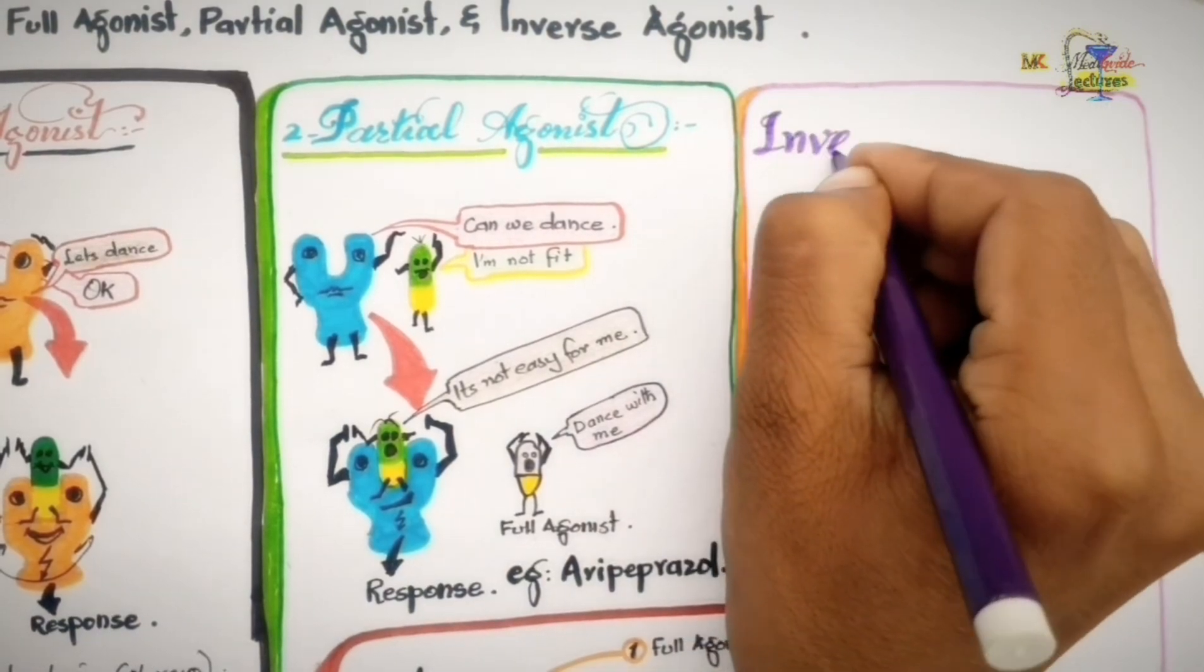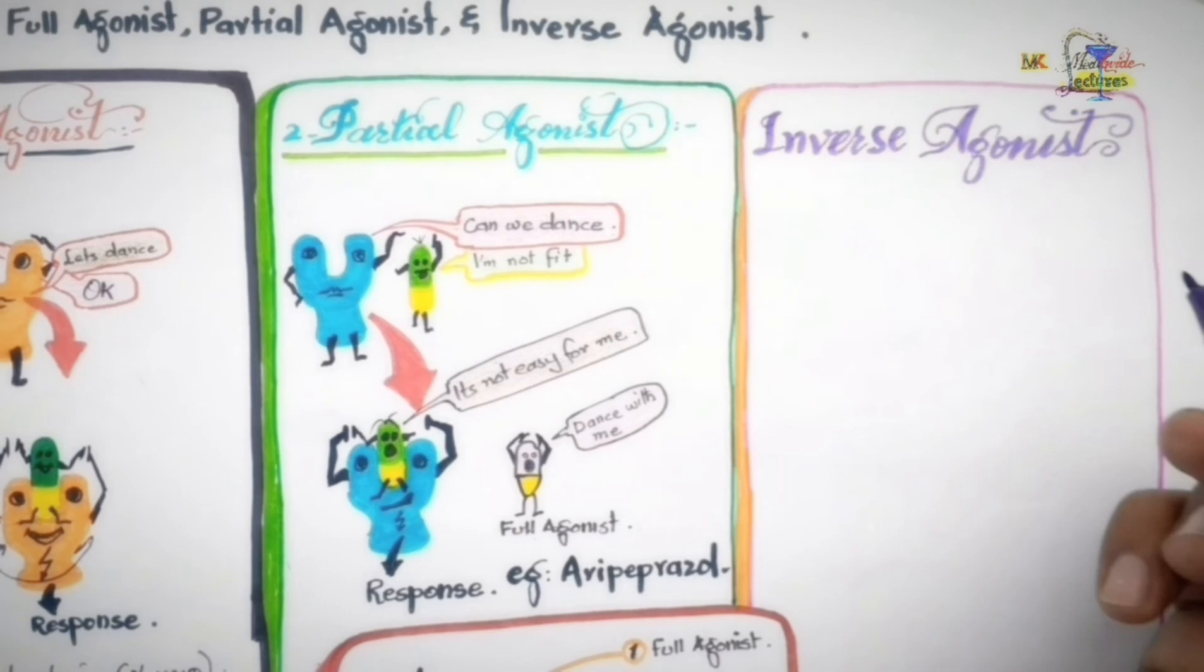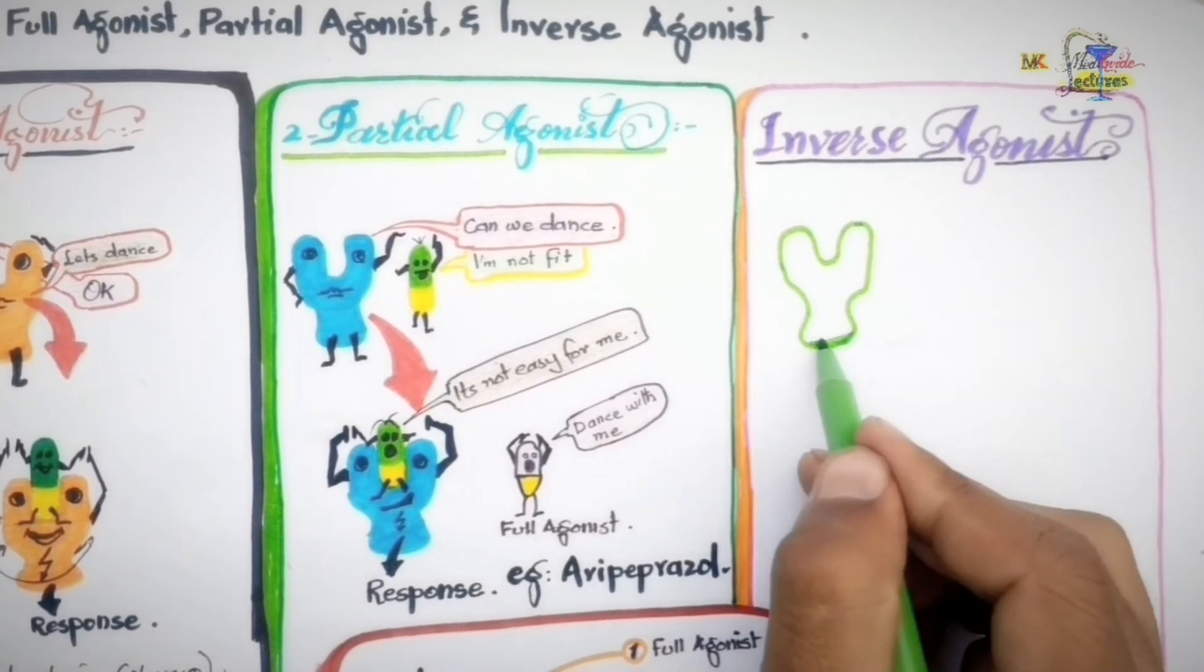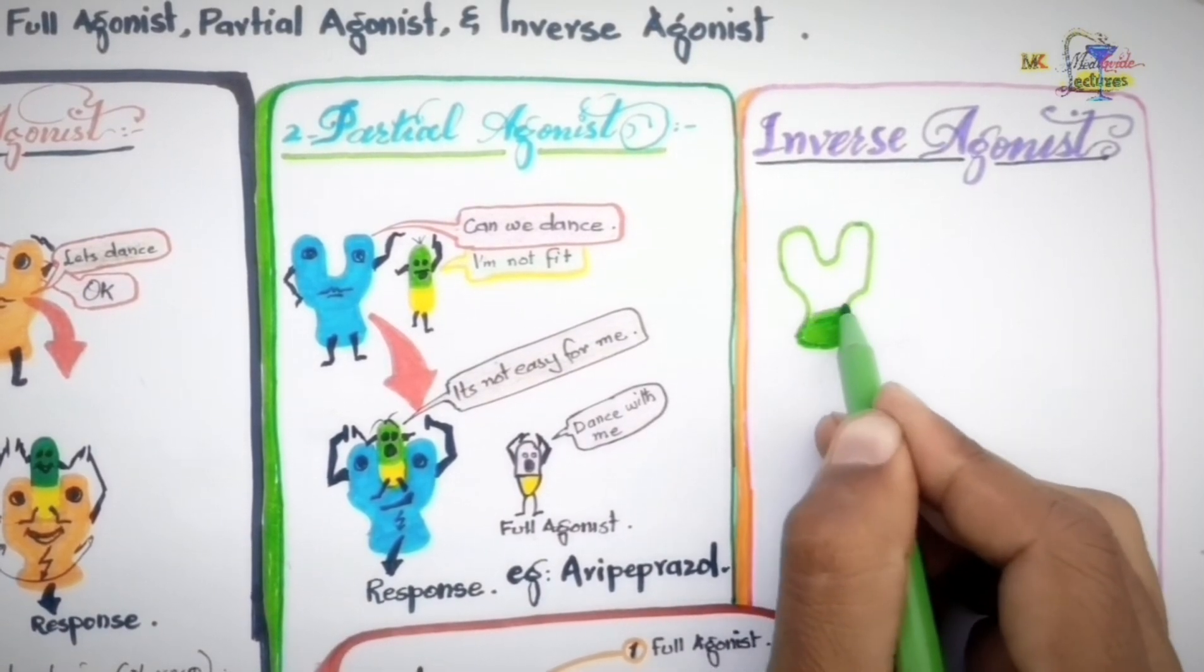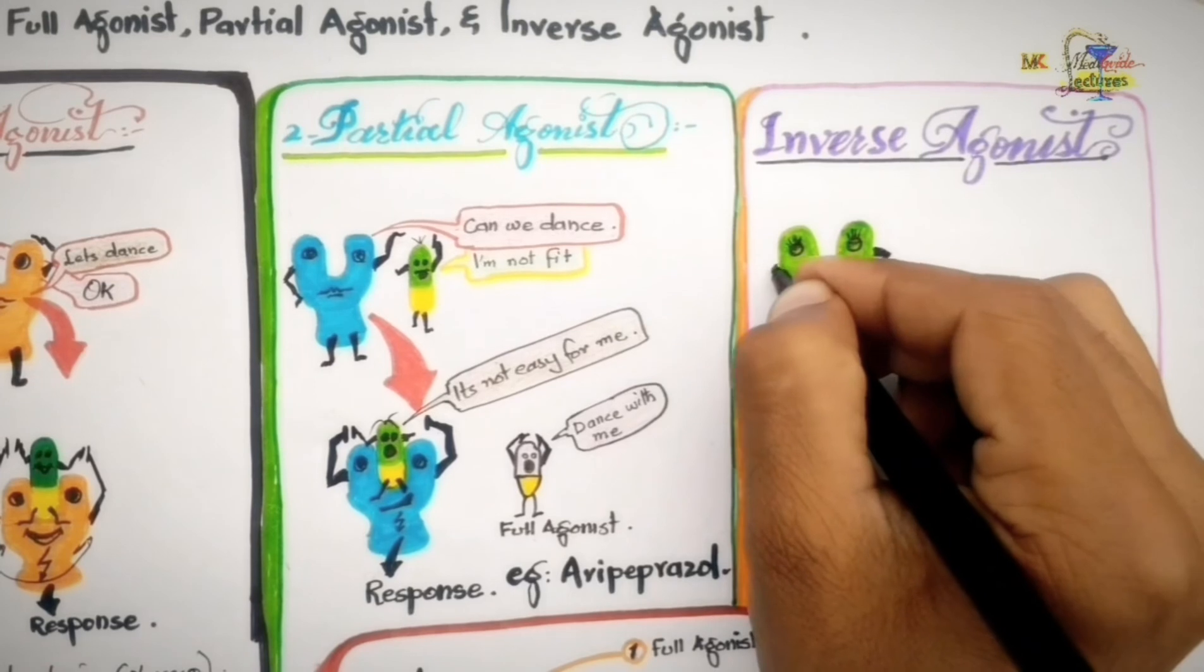The third type of agonist is inverse agonist. Generally, unbound receptors are inactive and upon binding of agonists become activated. But, some receptors convert from an inactive state to active state spontaneously without the presence of an agonist. This activity of the receptor is known as constitutive activity.